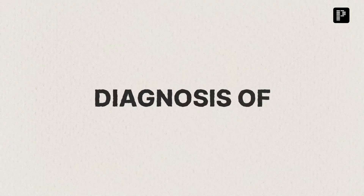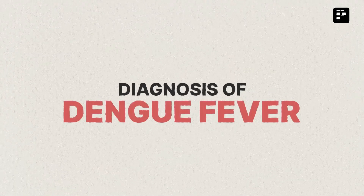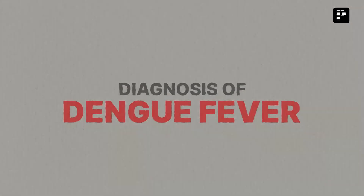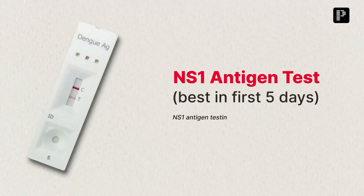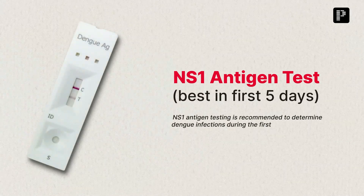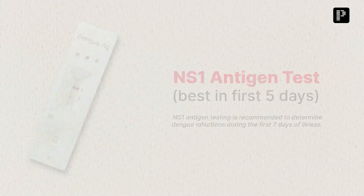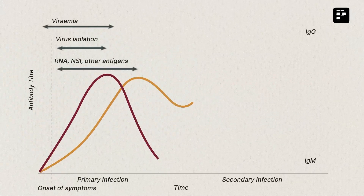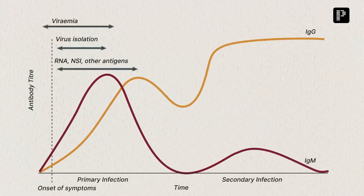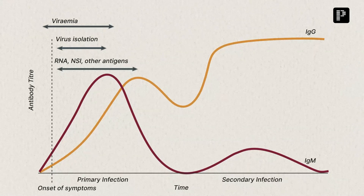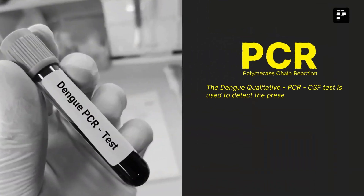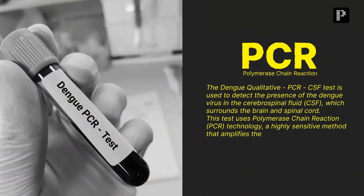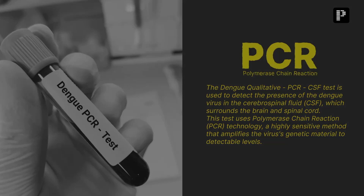To confirm the diagnosis, perform an NS1 antigen test within the first five days of the illness. Use IgM and IgG antibody tests after five days. Opt for PCR when necessary to detect the virus.